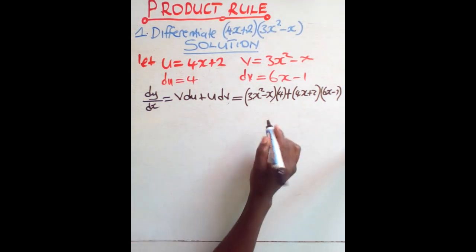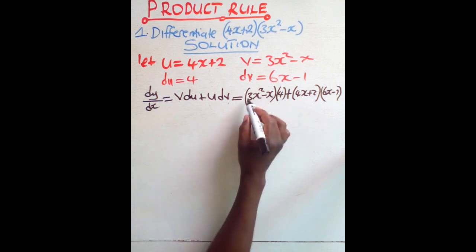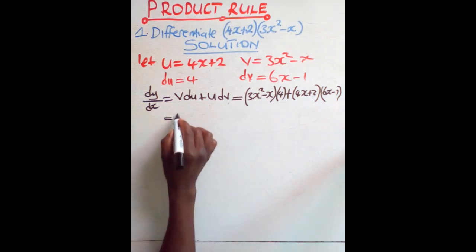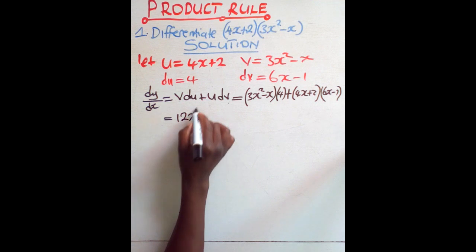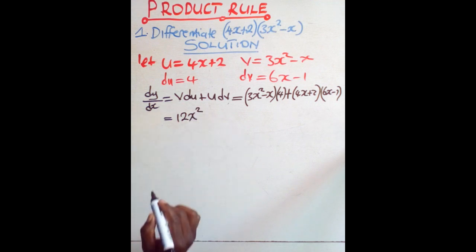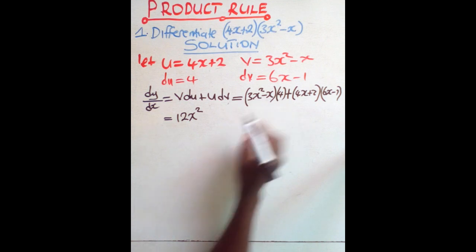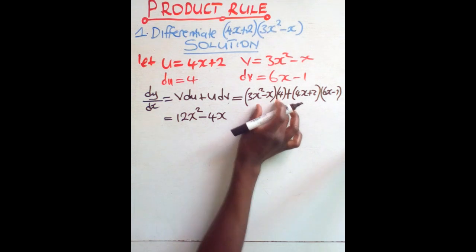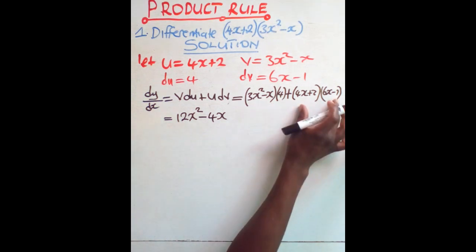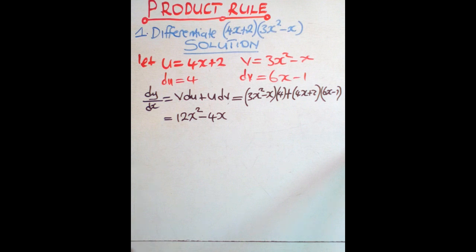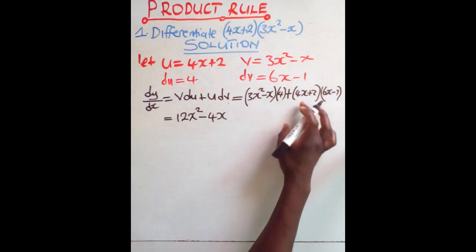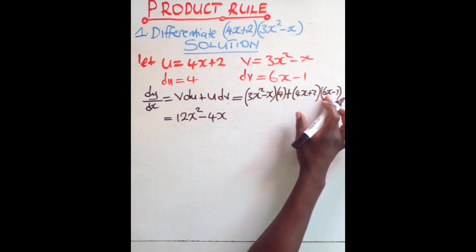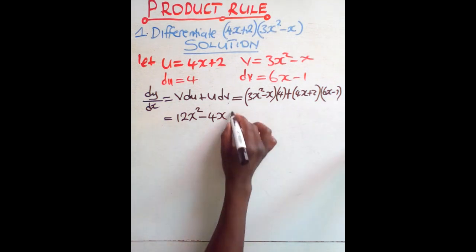So to open the brackets, it means you are saying 4 times 3x squared, it will actually give you 12x squared. Then you have 4 times negative x, it will give you negative 4x. You have opened these brackets. We are remaining with those.